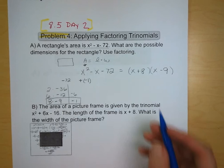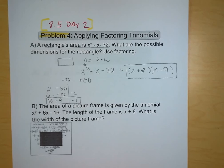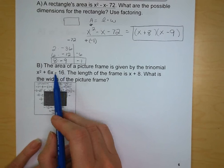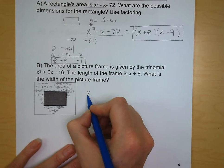As always, you can double-check your answer by FOILing, and you'll get that we started with x² - x - 72. Our second example here, we have letter B. The area of a picture frame is given by the trinomial x² + 6x - 16. And we already know that the length of the picture frame is x + 8, and we want to know what the width is going to be.